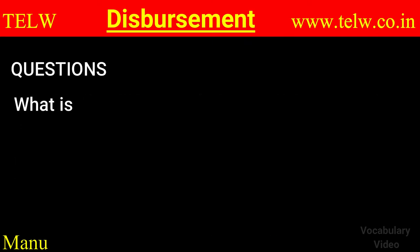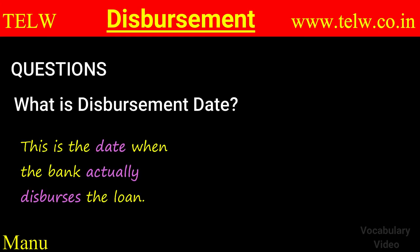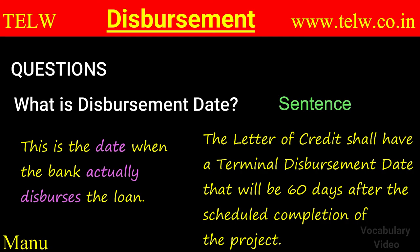What is disbursement date? This is a date when the bank actually disburses the sanctioned loan amount. How is it used? The letter of credit shall have a terminal disbursement date that will be 60 days after the scheduled completion of the project.